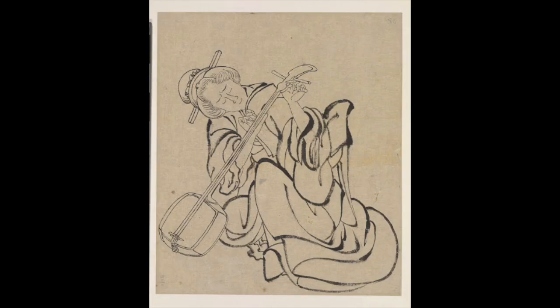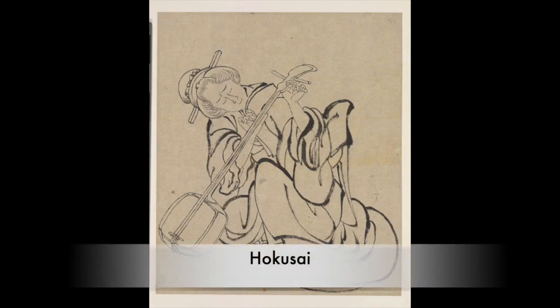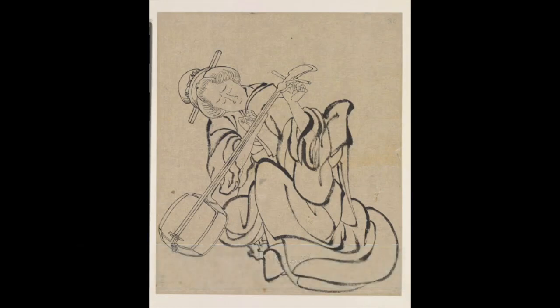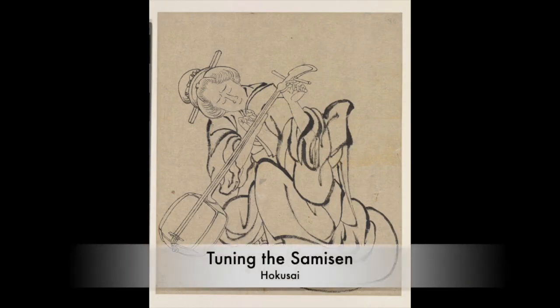Here is a picture drawn by an artist named Hokusai. The picture is made out completely of lines. Can you see what Hokusai made a drawing of? Do you see a person — a man or a woman? Do you see a musical instrument? It looks like a violin or a banjo.